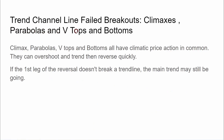Trend channel lines, failed breakouts, climaxes, parabolas, and V-tops and bottoms. Climax, parabolas, V-tops and bottoms all have climactic price action in common. They can overshoot and the trend then reverses quickly. If the first leg of a reversal doesn't break your trend line, the main trend may still be going.